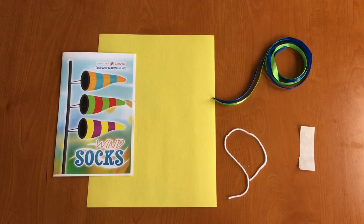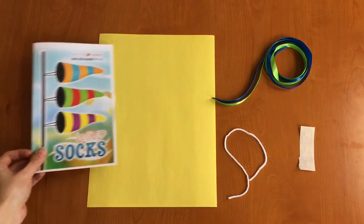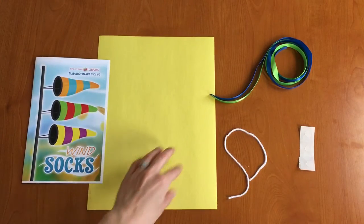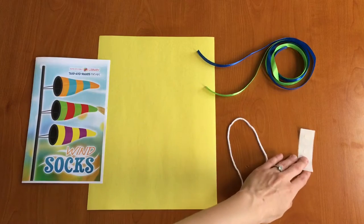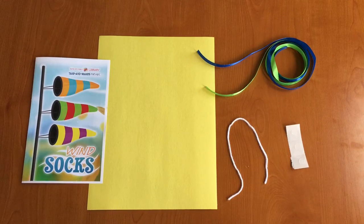Let's go ahead and get started and take a look at what we have in our Take and Make kits today. In your Take and Make kit you should have an instruction booklet, a piece of construction paper, two colorful ribbons, a piece of string, and three glue dots. Let's get started!